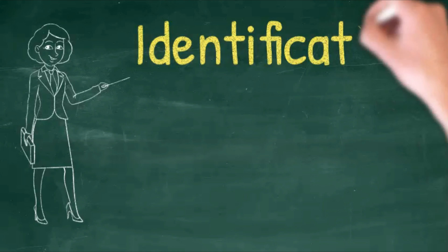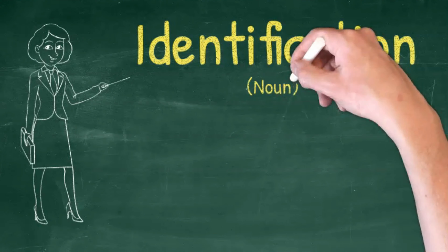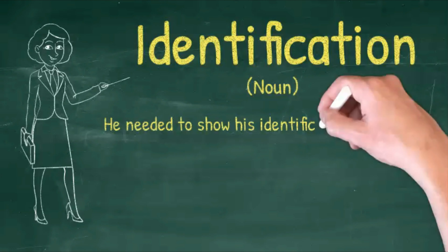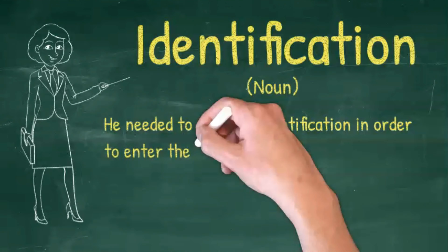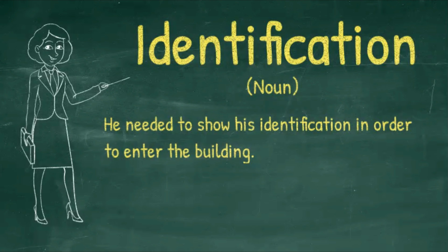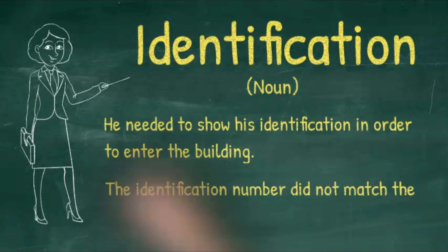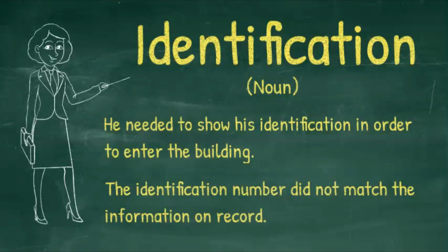The noun form is 'identification'. Let's look at a sentence. He needed to show his identification in order to enter the building. The identification number did not match the information on record.